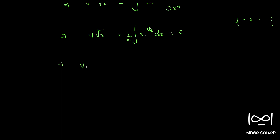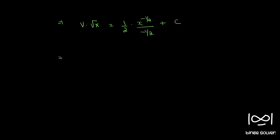Integrating: x raised to minus 3 by 2 integrates to x raised to minus 1 by 2 divided by minus 1 by 2. The 1 by 2 outside and the minus 1 by 2 denominator cancel to give minus 1 by root x. So v into root x equals minus 1 by root x plus c.